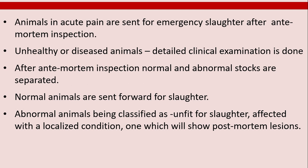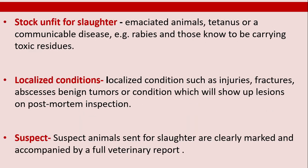Stock unfit for slaughter includes emaciated animals, animals with tetanus or a communicable disease such as rabies, and those carrying toxic residues. Localized conditions include injuries, fractures, abscesses, benign tumors, or conditions which will show up as lesions on post-mortem inspection. Suspect animals sent for slaughter are clearly marked and accompanied by a full veterinary report.